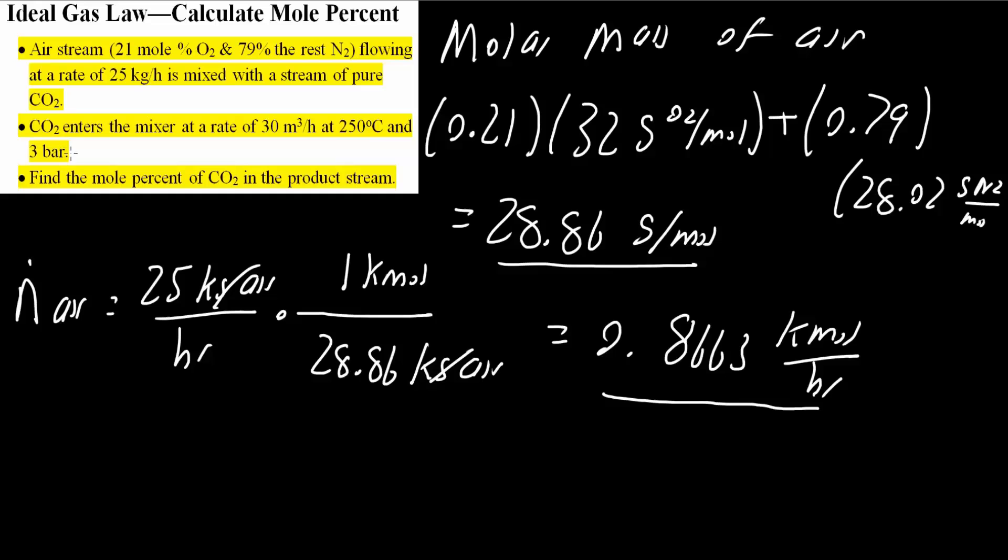Next, we need to use our CO2 information. They gave us 250 degrees Celsius and 3 bars, and 30 meter cube per hour. This is where we will have to use the ideal gas law. We are going to assume that this is ideal. So we will have PV equals nRT.